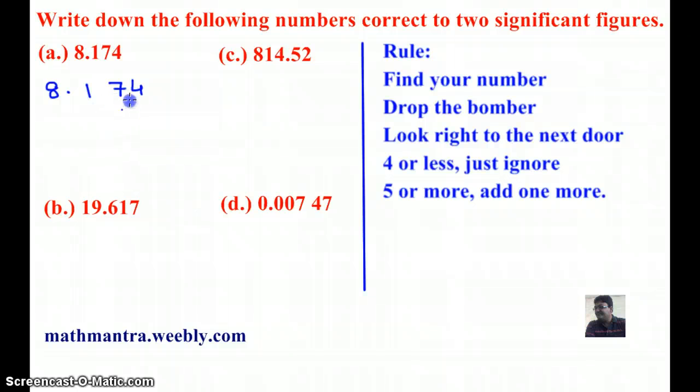8.174. Here, the first significant figure is 8, second significant figure is 1, and the third significant figure is 7. Therefore, we should circle 7 because we are rounding off the number correct to three significant figures.